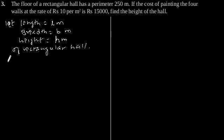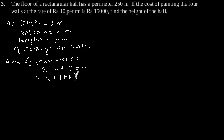Now the area of 4 walls is equal to 2 into length into height plus 2 into breadth into height, which is also equal to 2 into length plus breadth into height. Now perimeter of the floor of hall is equal to 2 into length plus breadth.